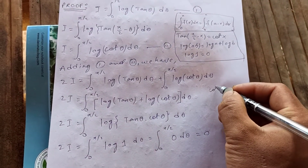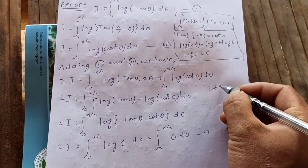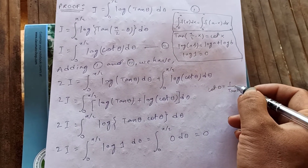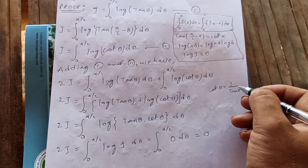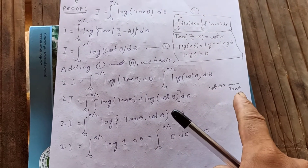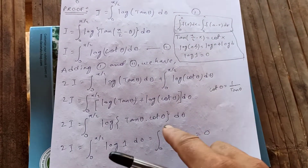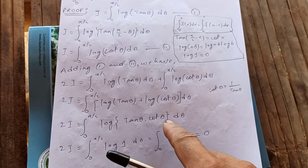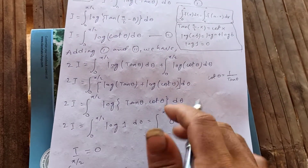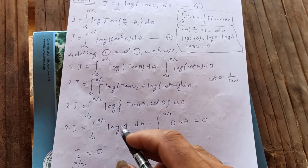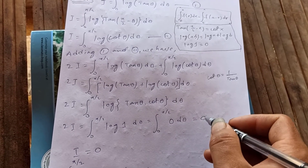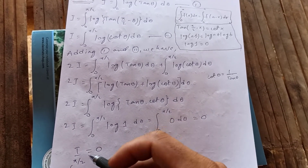Why does tan θ times cot θ equal 1? Because cot θ is just 1 over tan θ, so tan θ times cot θ equals 1. We know that log(1) equals 0, so the integral from 0 to pi over 2 of 0 dθ equals 0. Therefore 2I equals 0, which means I equals 0.